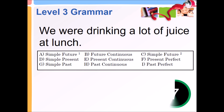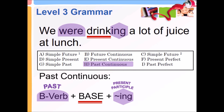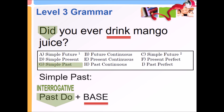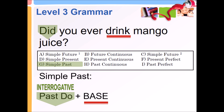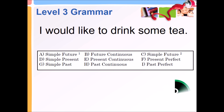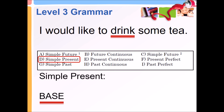We were drinking a lot of juice at lunch. Past continuous: past be verb plus base plus present participle ing. Do you ever drink mango juice? Simple past, interrogative: past do plus base. I would like to drink some tea. Simple present. Base.